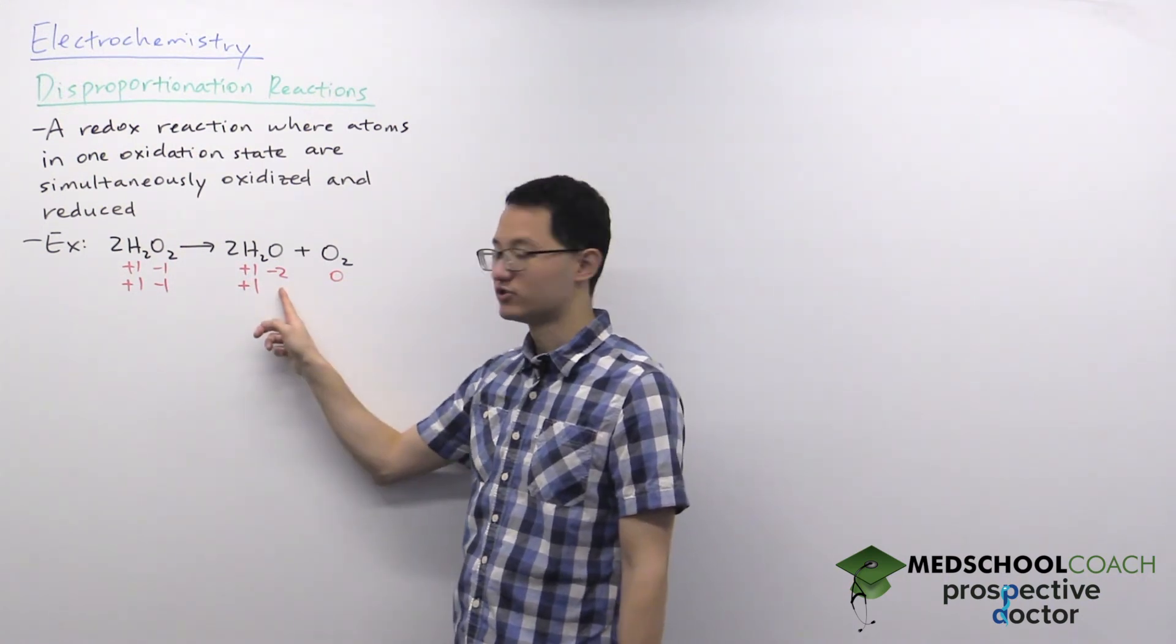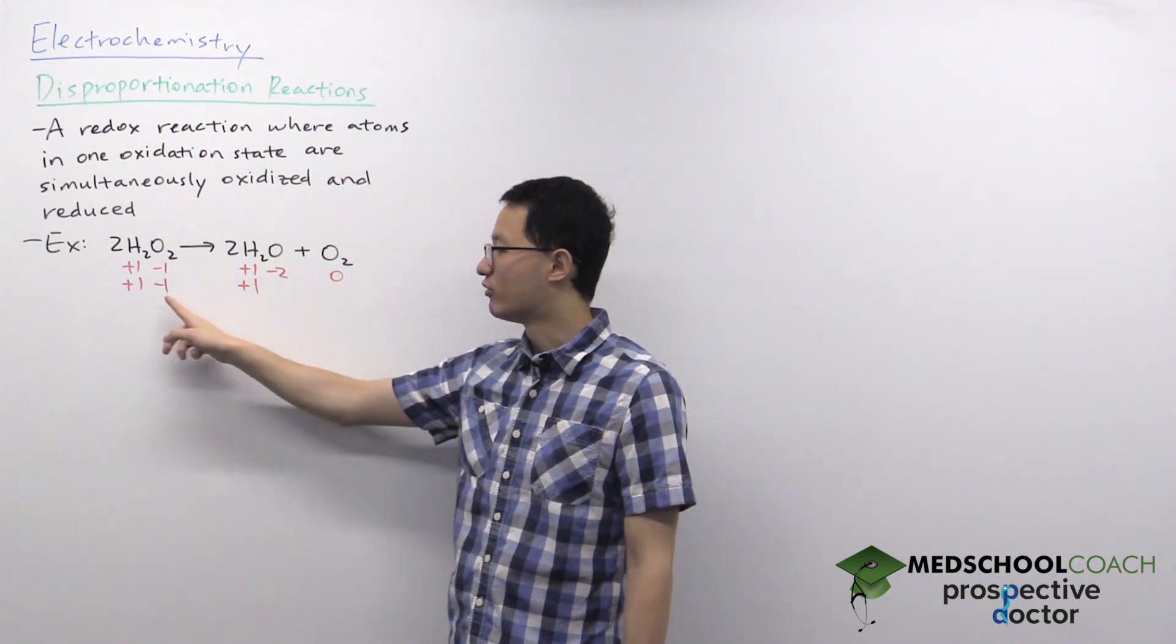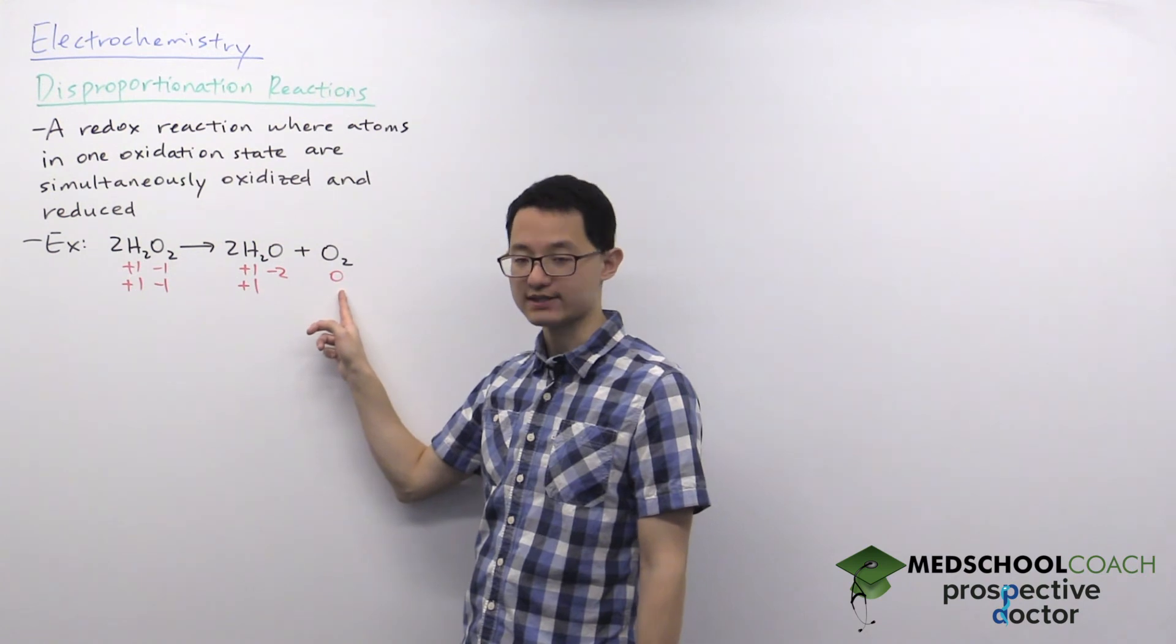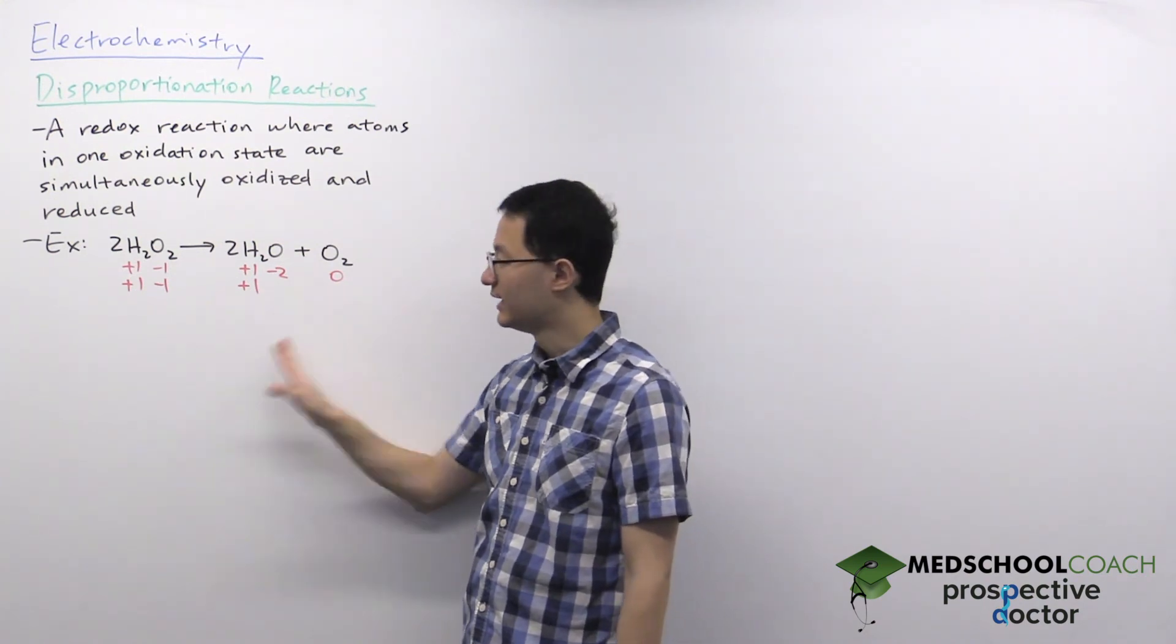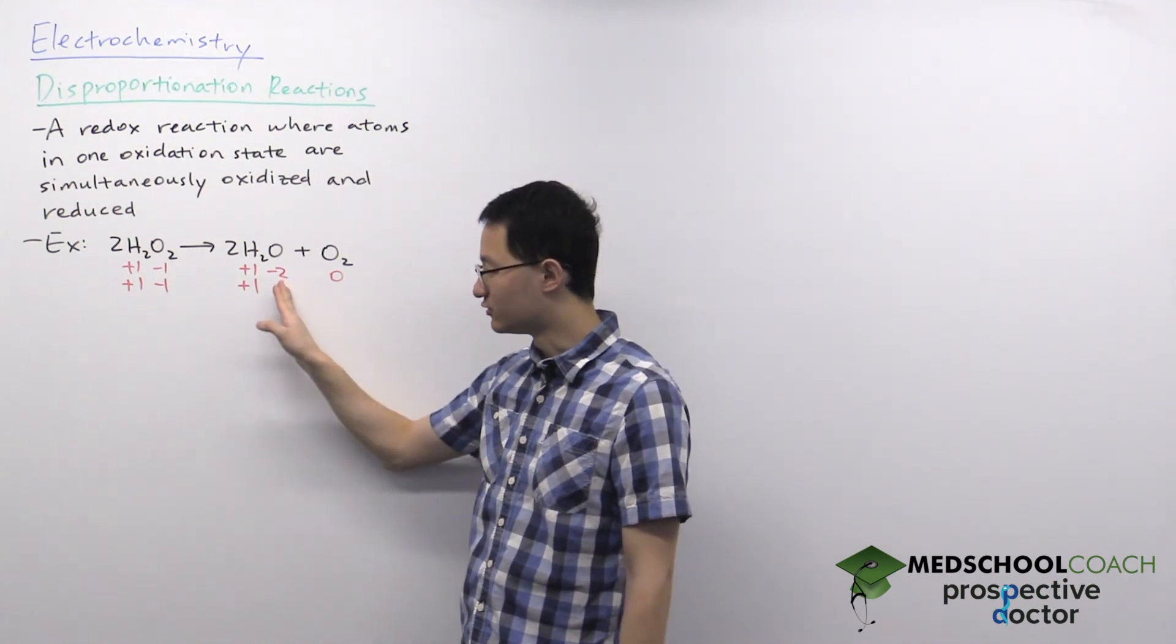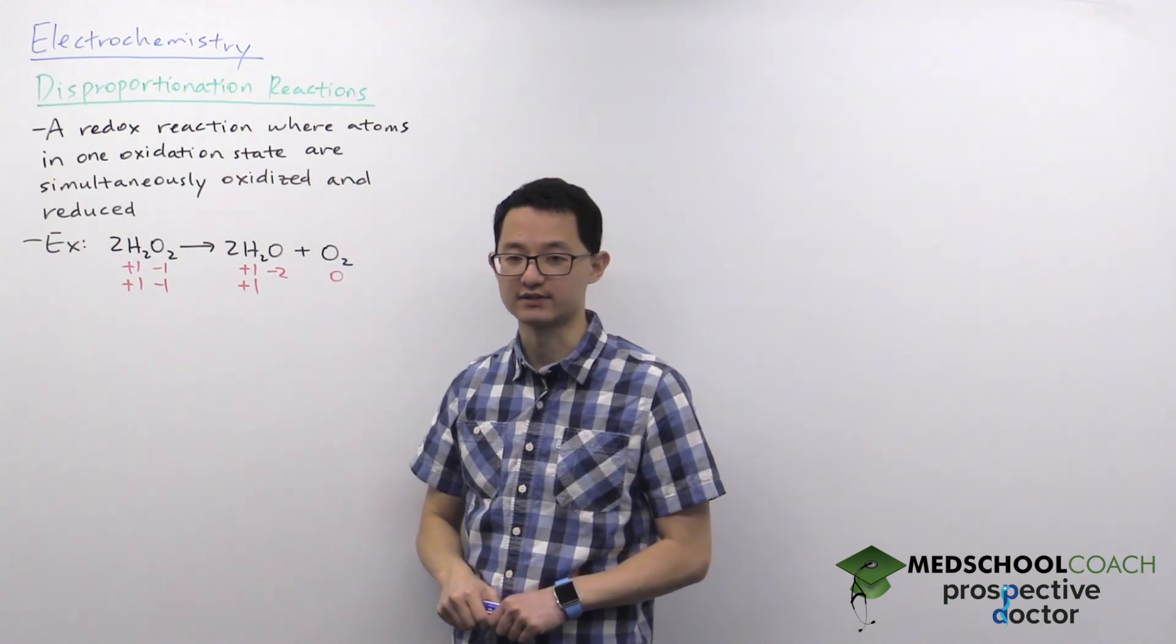So the ones that went into water got reduced - they gained an electron. The ones that went into O2 got oxidized - they lost an electron. So again one atom in one oxidation state is simultaneously reduced and oxidized. So that's what a disproportionation reaction is.